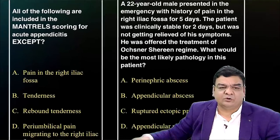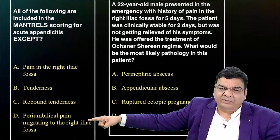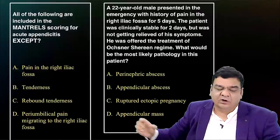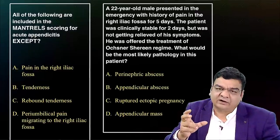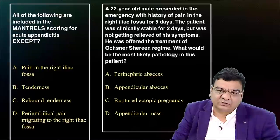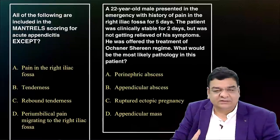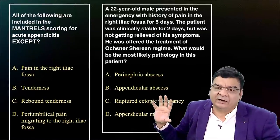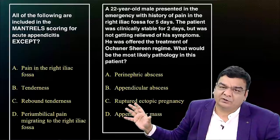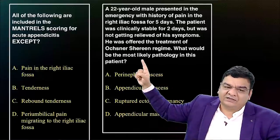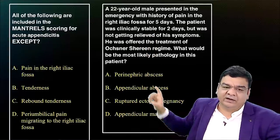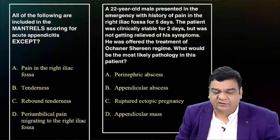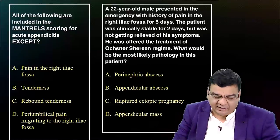From appendix, expect questions on the Alvarado scoring system — two points given to tenderness and leukocytosis. There may also be a question on appendicular abscess (extraperitoneal drainage) or appendicular mass where the Ochsner-Sherren regimen (conservative treatment) is offered. This is again a hot area.